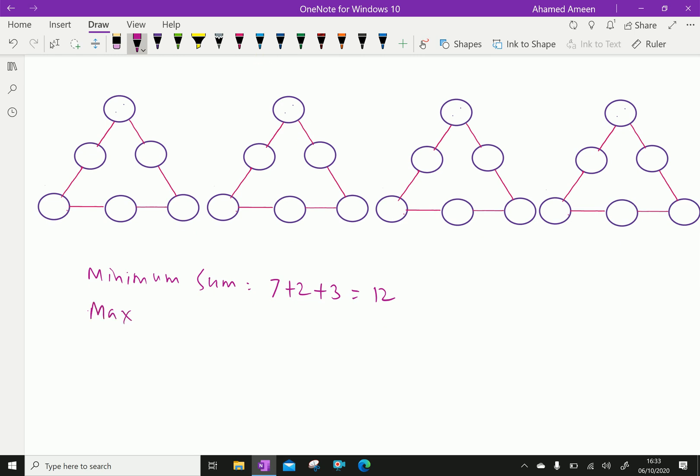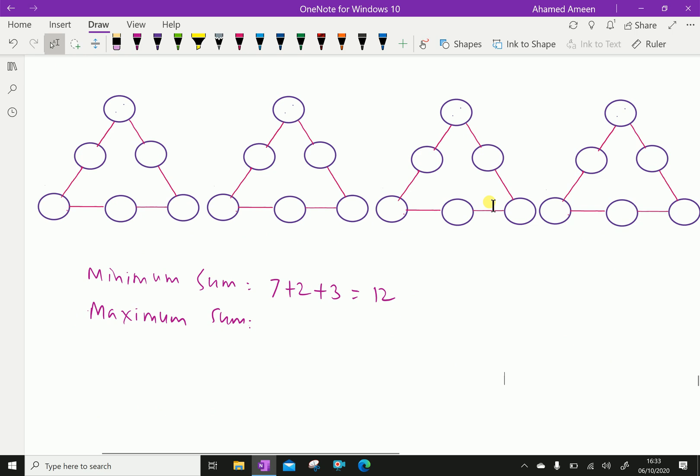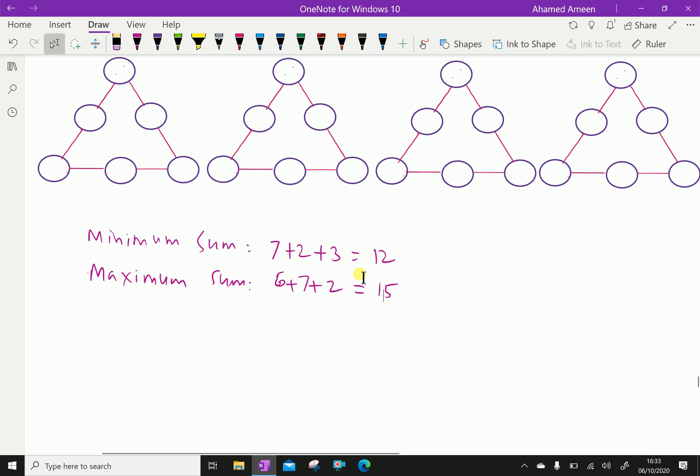Then maximum sum, for that you have to get the last two numbers with addition of the first number: 6 plus 7 plus 2. 6 plus 7 is 13 plus 2 is 15. So we have minimum addition sum is 12, maximum sum is 15.